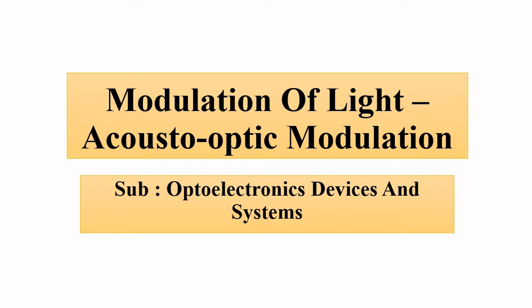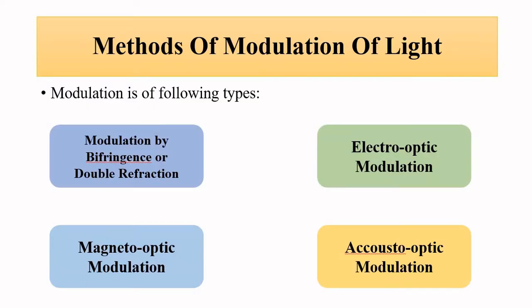Hello friends, welcome to Engineering Tutorial. We will continue our discussion related to optoelectronics devices and systems and the modulation of light. So far in our discussion related to external methods of modulation of light, we have covered birefringence or double refraction, we have covered electro-optic modulation, and we have covered magneto-optic modulation. In this video we are going to discuss the acousto-optic modulation method.